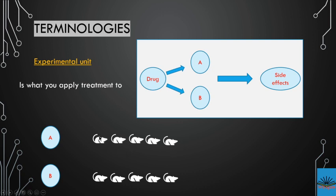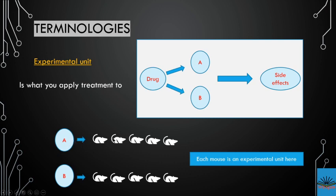For example, if Drug A is applied to five mice and Drug B is applied to another five mice, and those mice are housed separately and are independent of each other — each mouse in its own cage — then each individual mouse becomes an experimental unit.